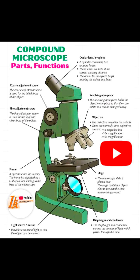We have another one called the base, which provides stability and supports the microscope. We also have the mirror or the light source, which directs light through the specimen for viewing. We have another one called the diaphragm, which controls the amount of light reaching the specimen.